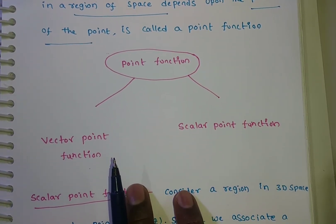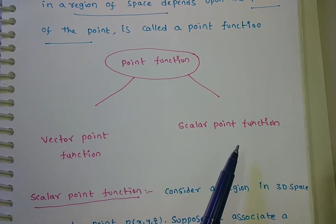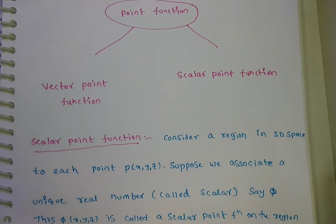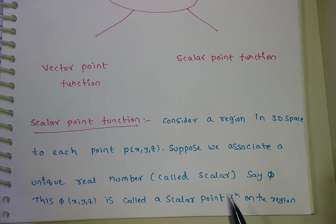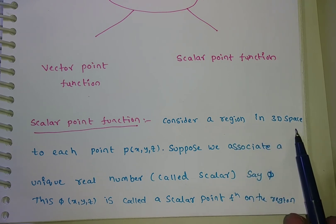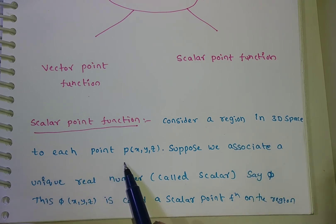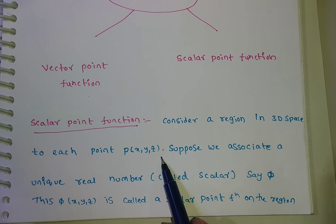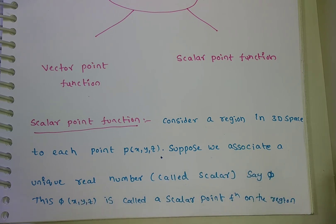These point functions are of two types: one is a vector point function and the other is a scalar point function. Scalar point function means: consider a region in a three-dimensional space. To each point P of (x, y, z), suppose we associate a unique real number, say phi — written as phi of x, y, z — this is called a scalar point function in the region.